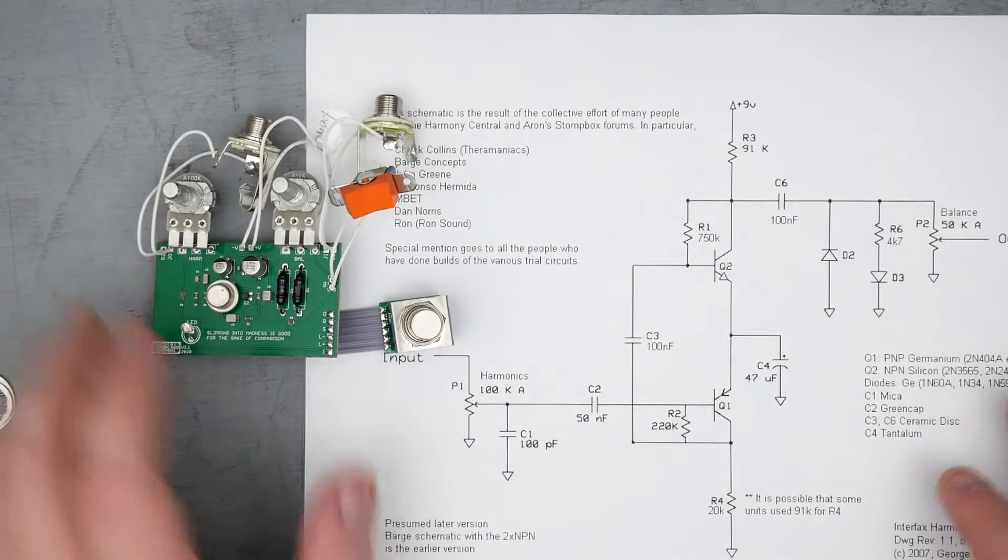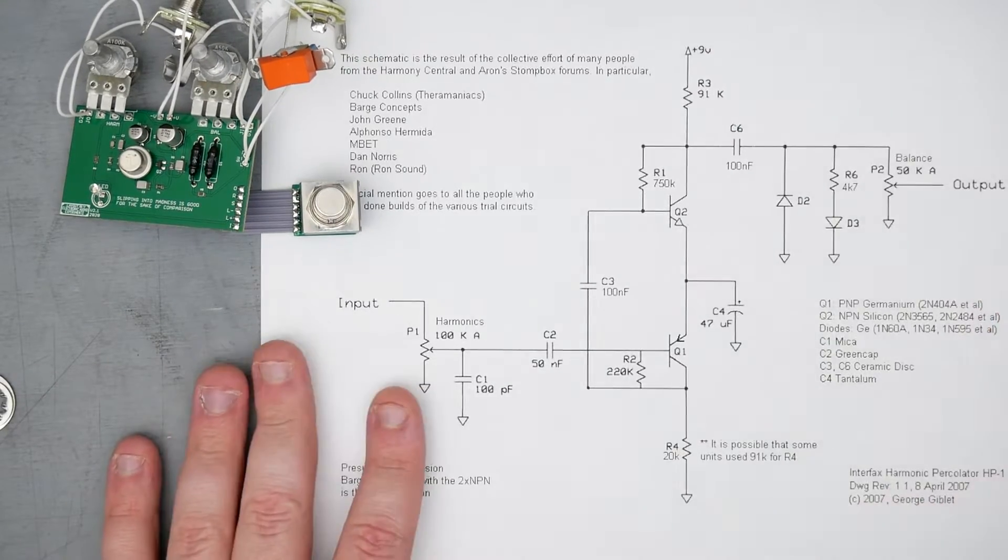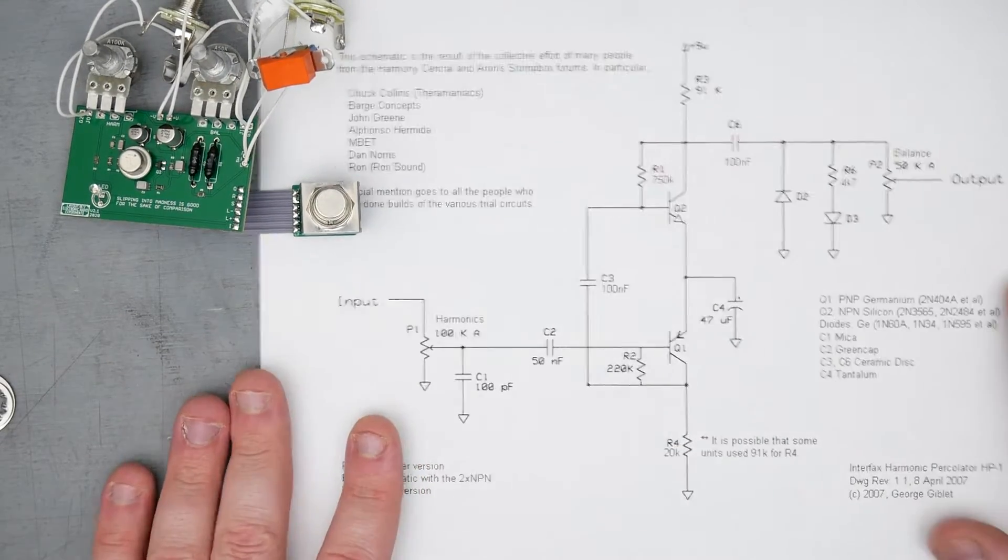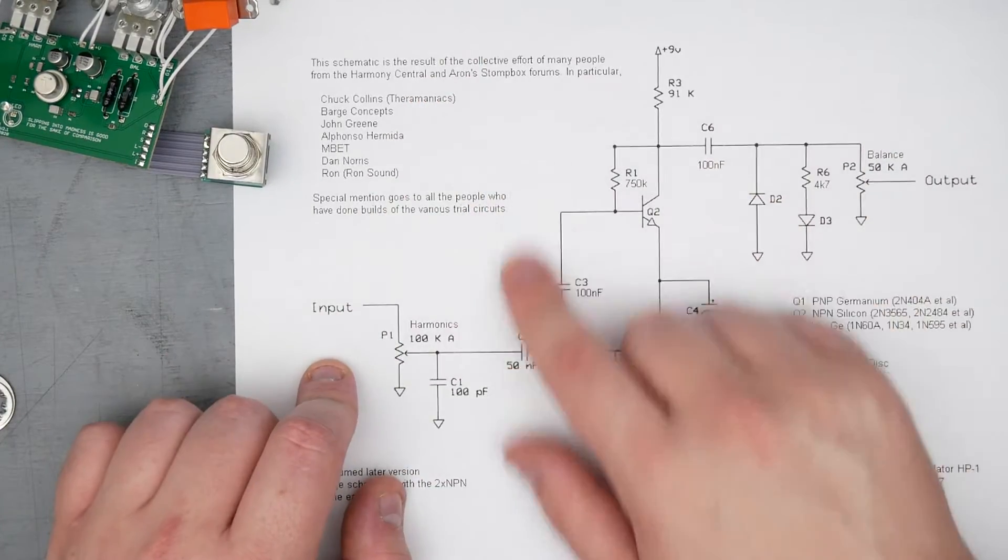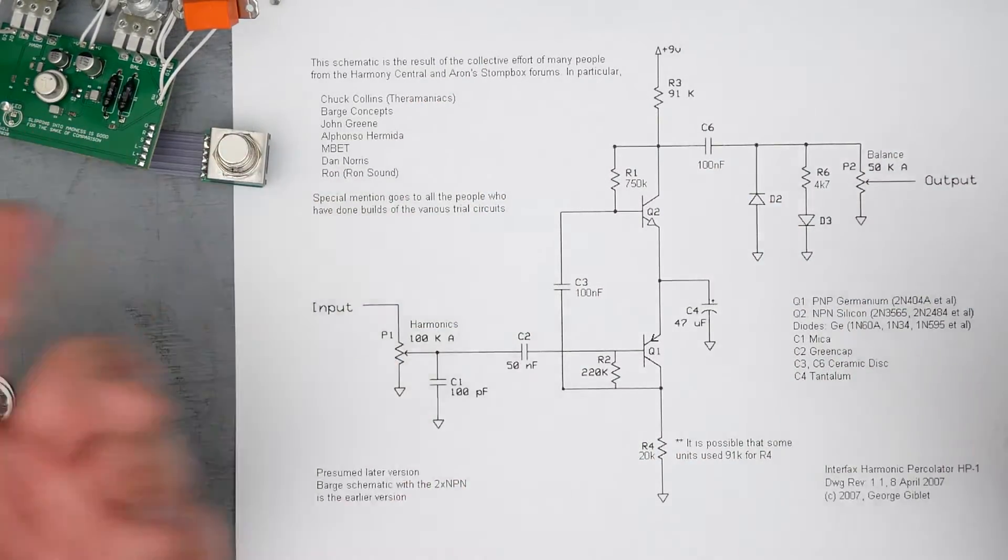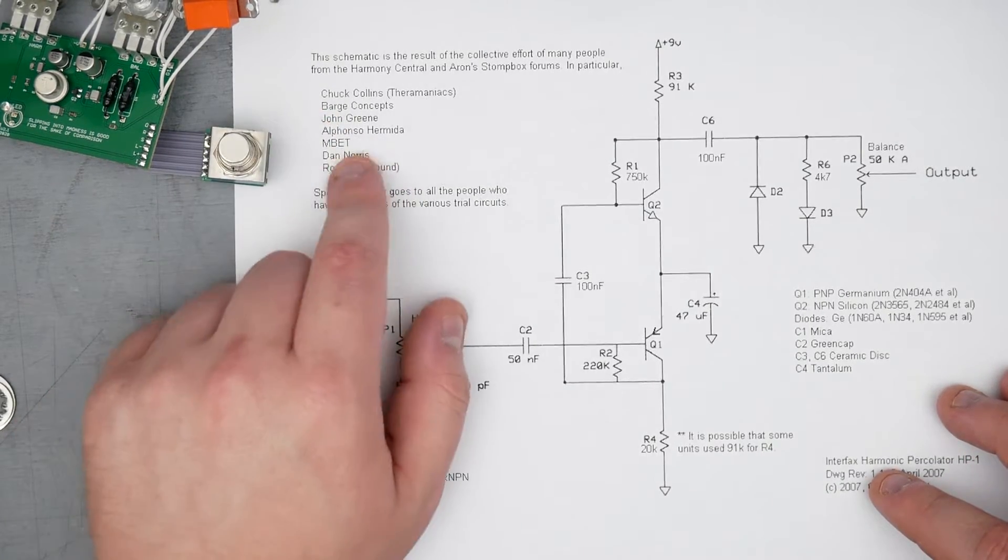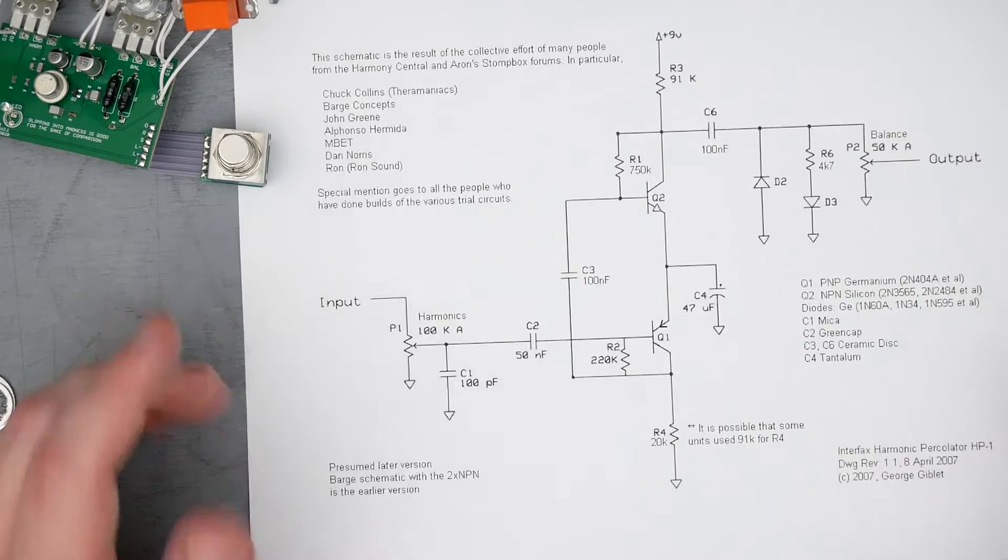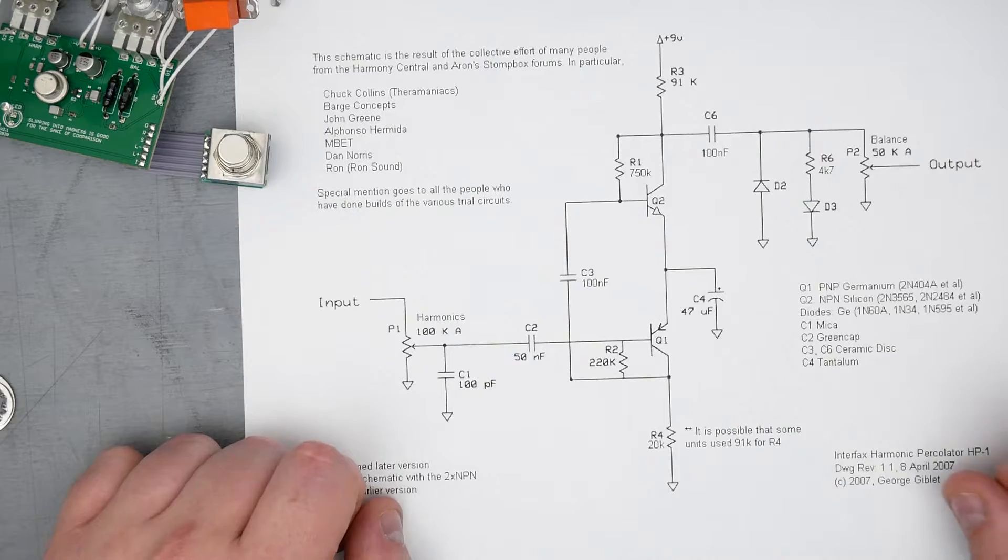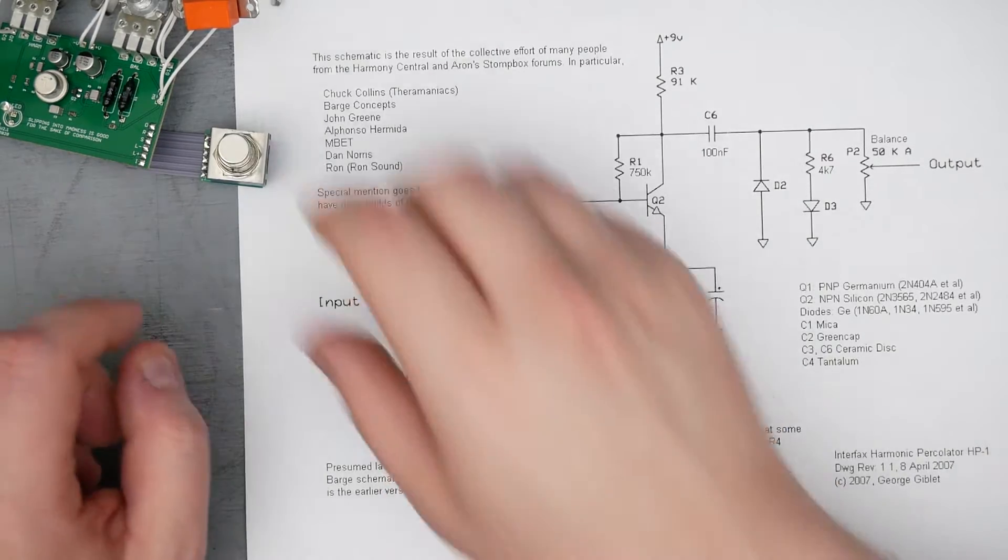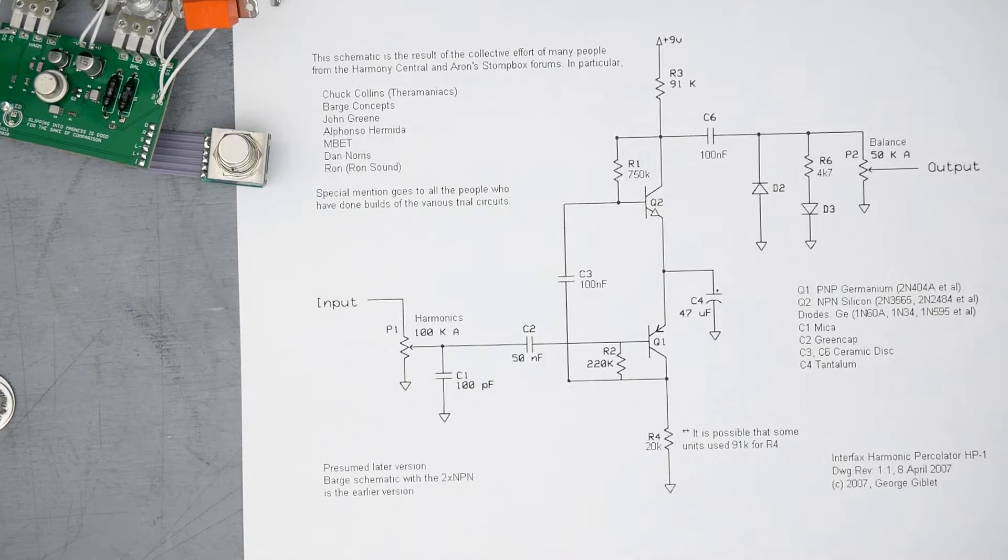So I thought it'd be interesting to compare the HP-2 here to the schematic for the harmonic percolator. There's, in fact, a couple of schematics floating around, but this one, as it says here, it's a result of the collaborations between a bunch of different people. There's all their names here. Chuck Collins, Barge Concepts, John Green, Alfonso Hermida, MBET, Dan Norris, Ron of Ron Sound. So thanks to those people for putting this schematic together. But like I said, I thought it'd be interesting just to go through the circuit and see where things differ and what things remain the same.